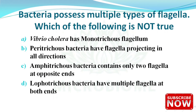Next: bacteria possess multiple types of flagella — which of the following statements is not true? The correct answer is option D — lophothrichous bacteria have multiple flagella at both ends. (This is incorrect; lophothrichous bacteria have a tuft of flagella at one end.)